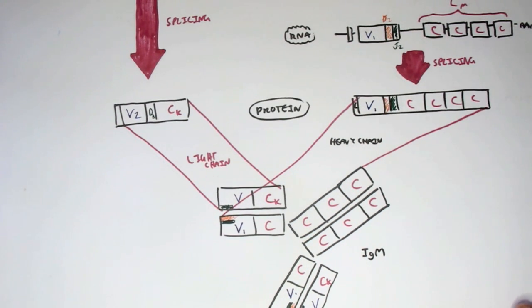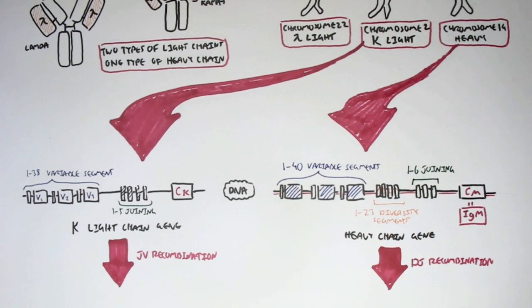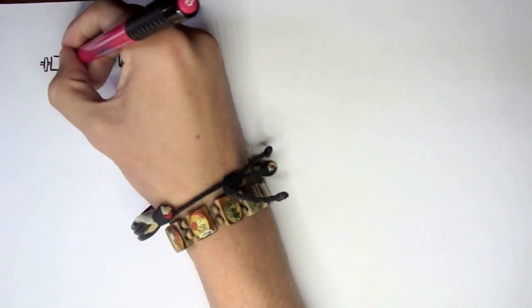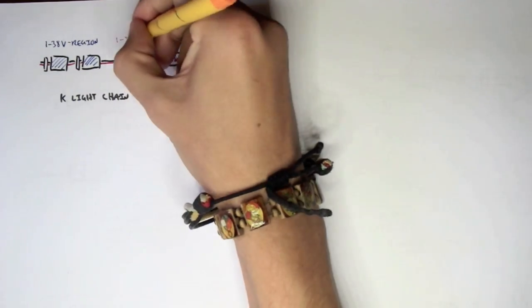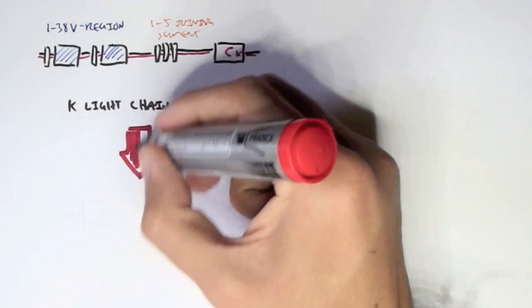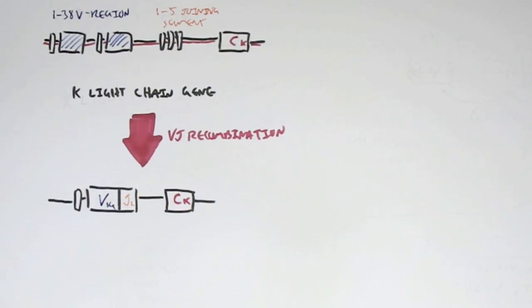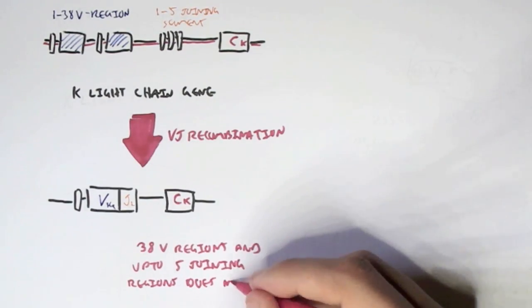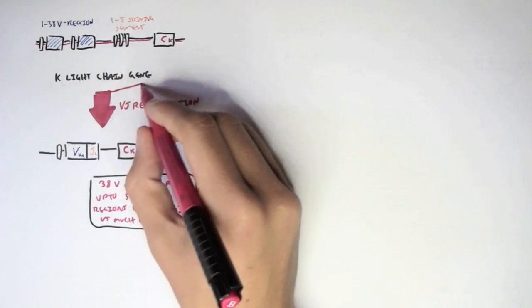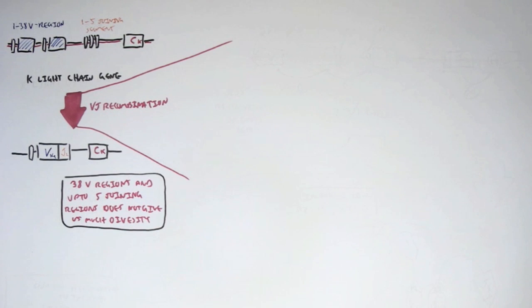How does the actual VJ recombination process occur in the kappa light chain gene? With only 38 variable regions and up to 5 joining segments, the math alone would not produce a sufficiently diverse antibody repertoire. Therefore, new nucleotides can actually be added during the VJ recombination process to increase the diversity and specificity of each antibody.